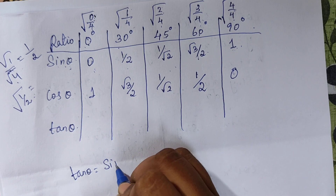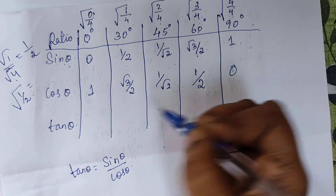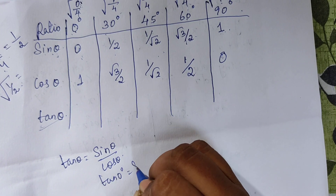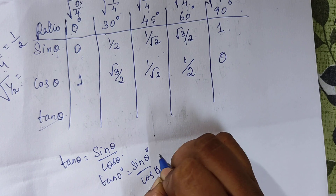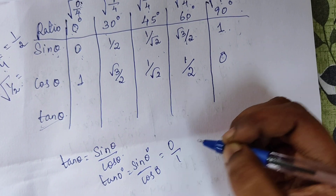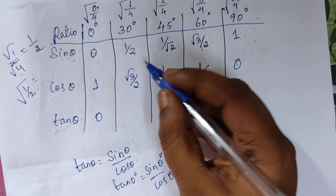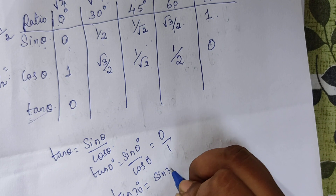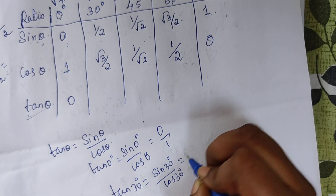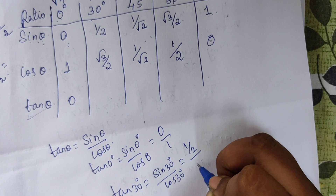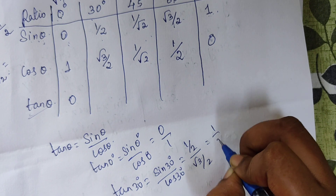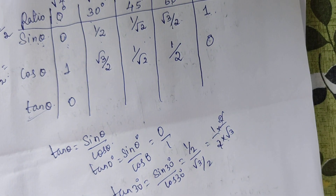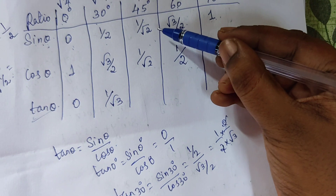For the tangent ratio, we use the fact that tan theta equals sin theta divided by cos theta. So tan 0° = sin 0° / cos 0° = 0/1 = 0. For tan 30°, sin 30° is 1/2 and cos 30° is √3/2. Dividing: (1/2) ÷ (√3/2) = 1/√3. For tan 45°, we divide 1/√2 by 1/√2, giving 1.